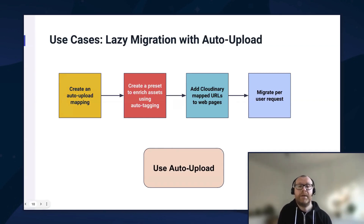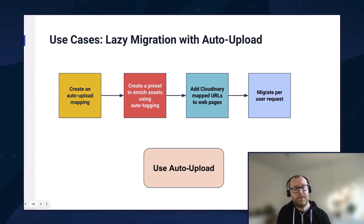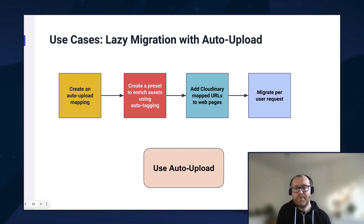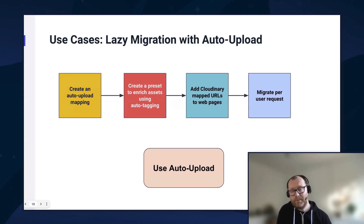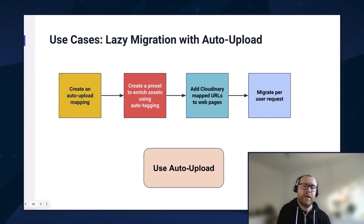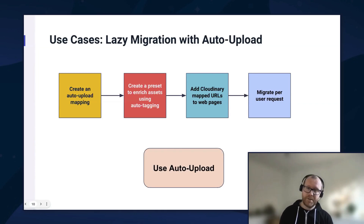With auto-upload, you can create an upload mapping and create a preset to enrich assets using auto-tagging via an upload preset. You essentially create a mapping within Cloudinary that maps a specific folder — so if we encounter that folder within the URL, we know to map that Cloudinary-derived URL through to an endpoint mapped to that directory. Assets are only pulled in dynamically, so if an asset through one of those URLs is never requested, it will never be pulled into Cloudinary. This gives you the opportunity to gradually build up a library. It's a no-code, low-code approach that can all be done directly through the media library.